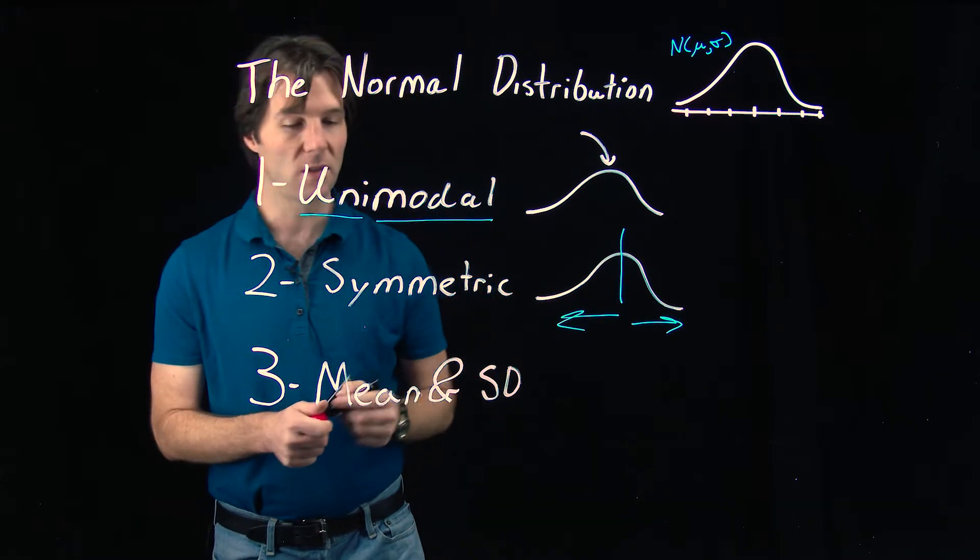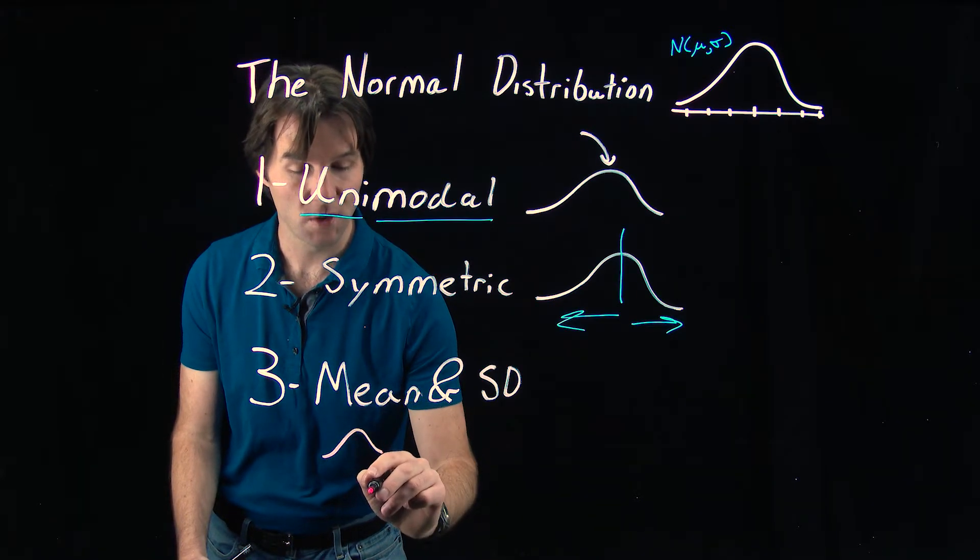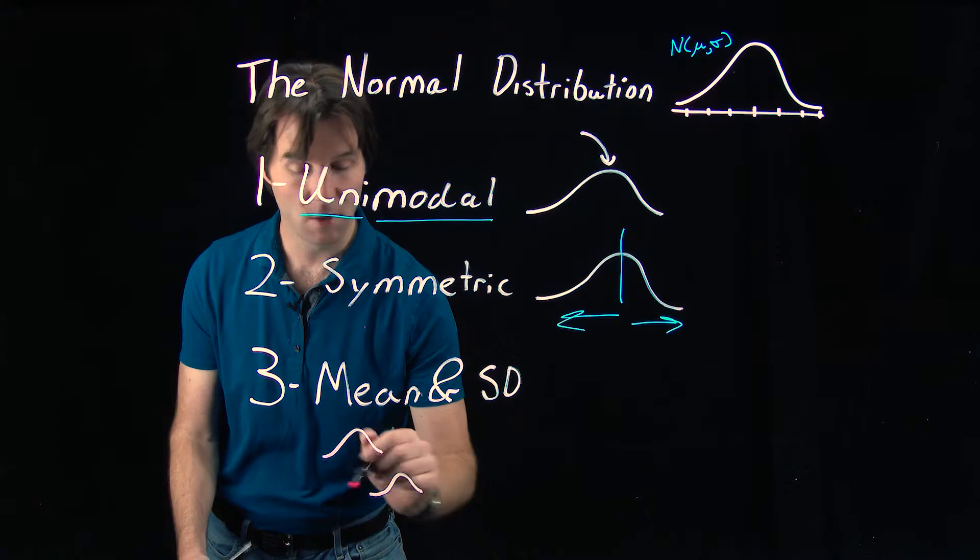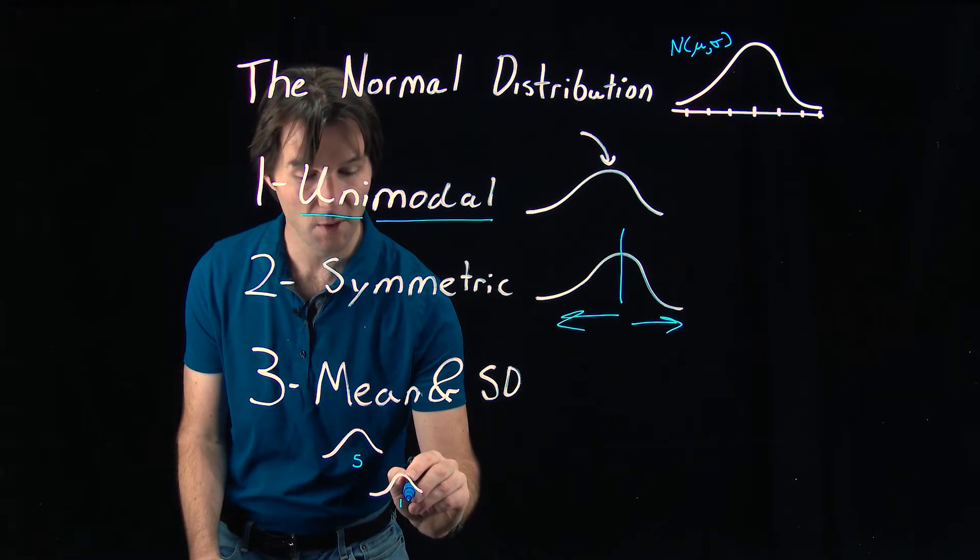And we can see differences with these if we were to change the mean. If we change the mean, we change where the center of the curve is at. So the curve could be centered at 5 or it could be centered at 10. That would just be where the middle of the curve is.